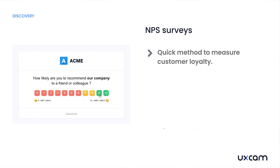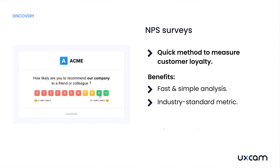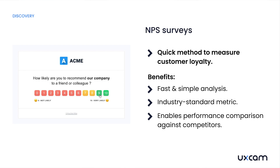The Net Promoter Score, or NPS, is a classic quick-and-dirty method for gauging customer loyalty. They're quick to administer, simple to analyze, and are an industry-standard metric that allows you to compare your app's performance over time or even against competitors. On the flip side, NPS surveys don't provide in-depth insights — they give you a number, but that number lacks context. Also, scores can be influenced by external factors, like a user having a bad day, that might have nothing to do with your app.